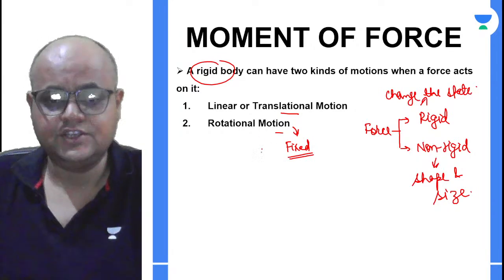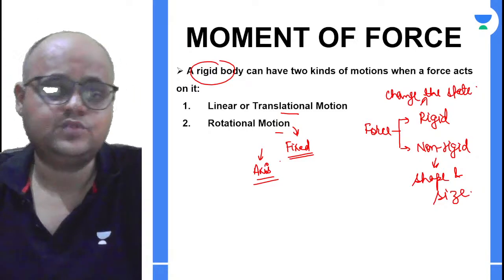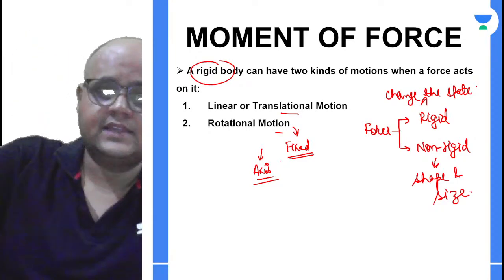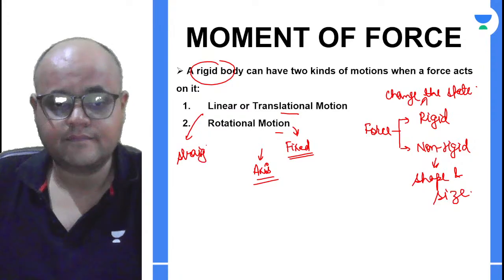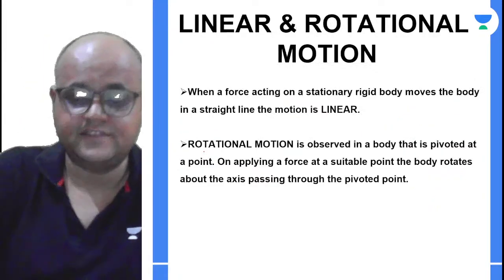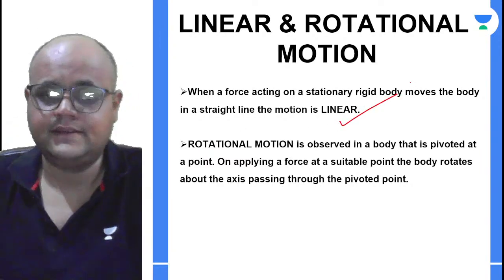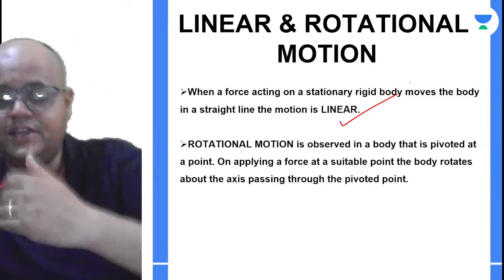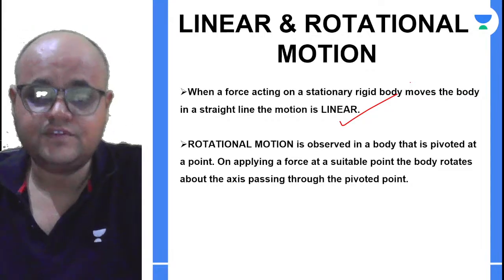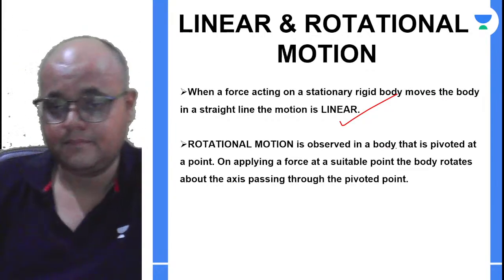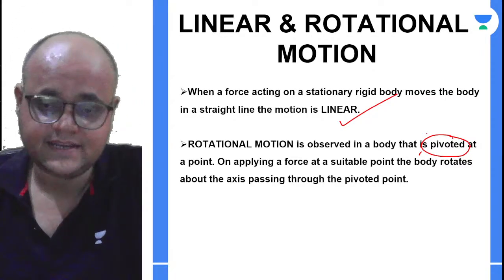In a linear or translational motion, the body moves in a straight line along a fixed direction. When one of the ends of the body is moving around a pivoted — that is, a fixed — point, we call it rotational motion. For example, when you open a door, one end of the door is fixed.